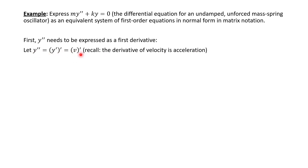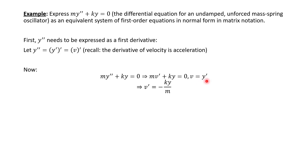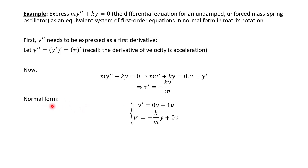So we let v equal y prime, replacing y prime in the equation. Then we replace y double prime with v prime. Now we solve for the first derivatives: y prime equals v, and solving for v prime from the equation gives v prime equals negative ky over m. This lets us write the system in normal form: y prime equals 0·y + 1·v, and v prime equals negative (k/m)·y + 0·v.